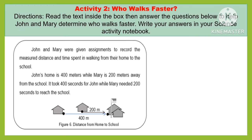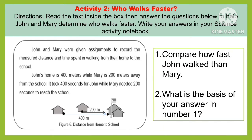Jan and Mary were given assignments to record the measured distance and time spent in walking from their home to the school. Jan's home is 400 meters away, while Mary is 200 meters away from the school. It took 400 seconds for Jan, while Mary needed 200 seconds to reach the school. Question 1: Compare how fast Jan walked to Mary. Question 2: What is the basis of your answer in number one?